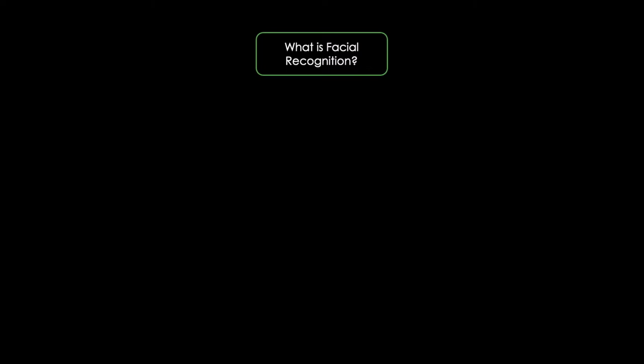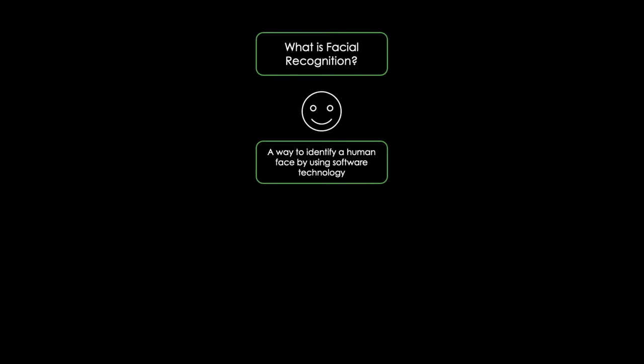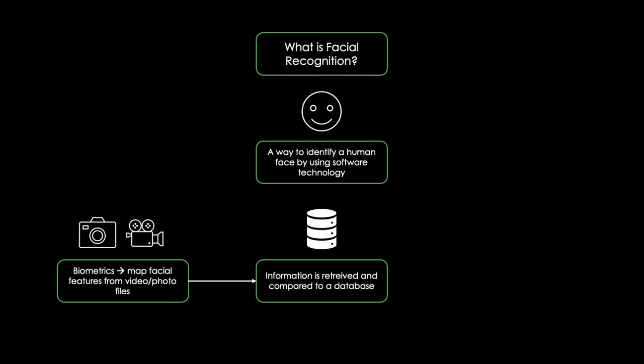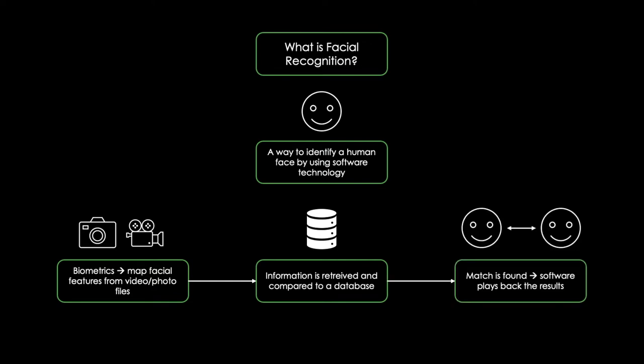Let's start by elaborating what facial recognition is. Simply put, facial recognition is a way to identify a human face by using software technology. The software uses biometrics to map facial features from videos or photo files. The information retrieved is then compared to a database of known faces, and once a match is found, the software gives back the results.